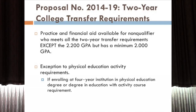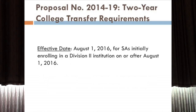Two key dates to track: 2016 for the progress toward degree changes and two-year college transfer changes, and 2018 for your initial eligibility changes.